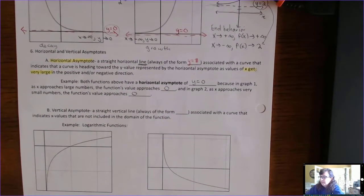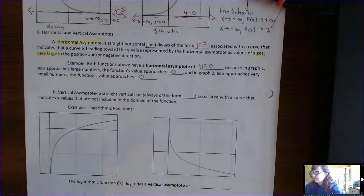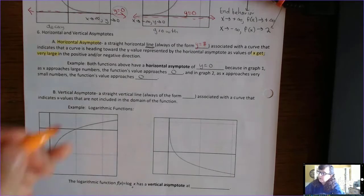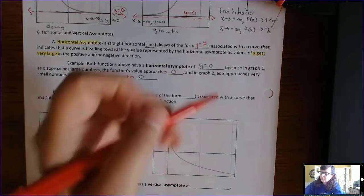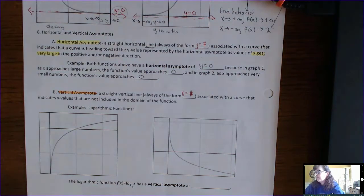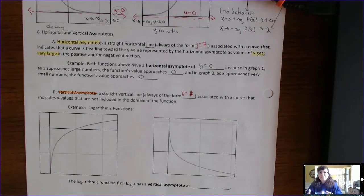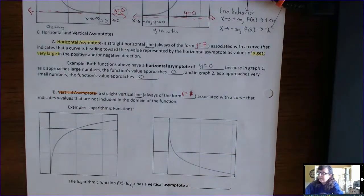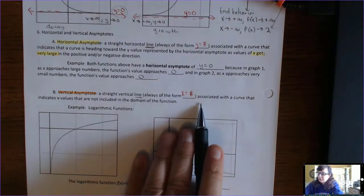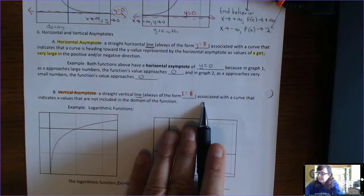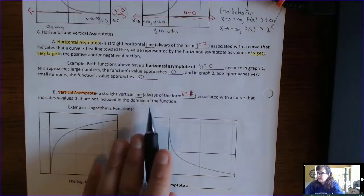Now let's look at vertical asymptotes. The vertical asymptote is a straight vertical line, always in the form of x equals a number. In class, when I ask what's the vertical asymptote, students will say '2,' but the correct answer is 'x equals 2.' You have to use the language of math — it's a line, and a vertical line always has an x in front of it. The vertical asymptote is associated with a curve that indicates x values not included in the domain of the function.